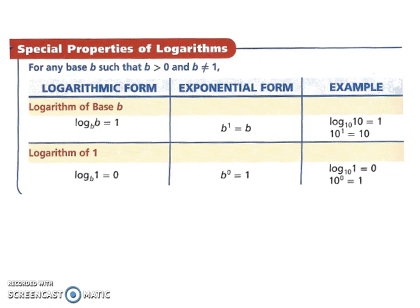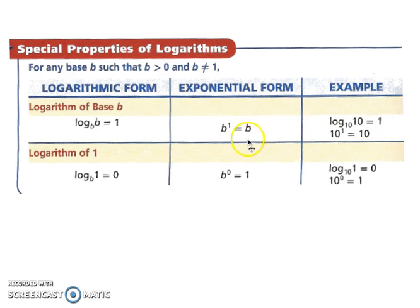Special properties of logarithms. For any base B such that B is greater than 0 and B cannot equal 1 — that should sound familiar. Logarithm of base B: if your base and what it's of are the same, it equals 1. So log base B of B is 1. Log base 5 of 5 is 1; log base 10 of 10 equals 1. Also, log base B of 1 equals 0.